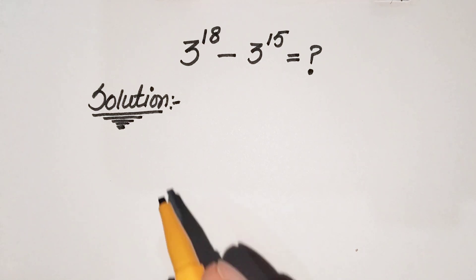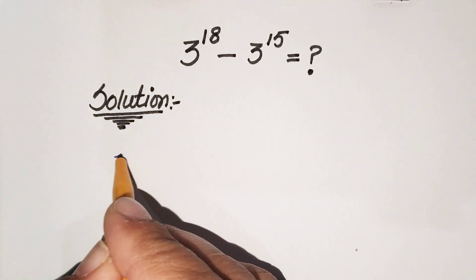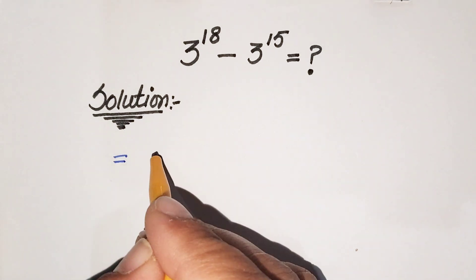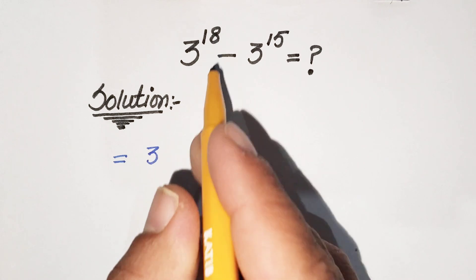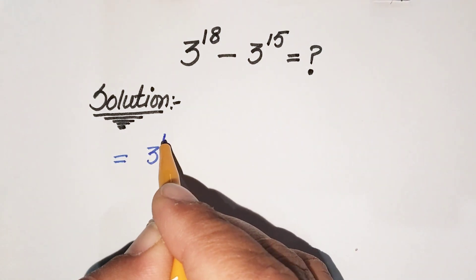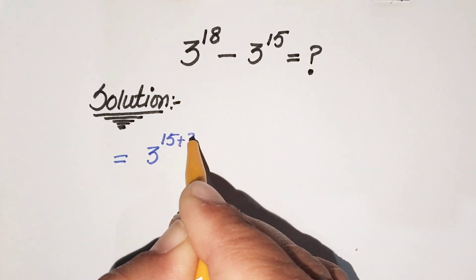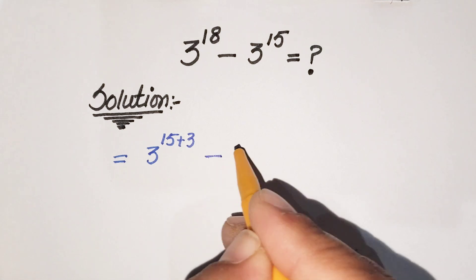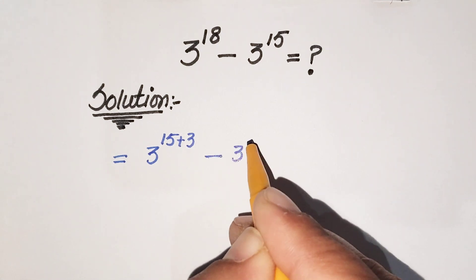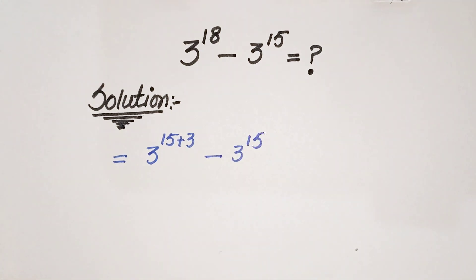First of all, we can write that 3 raised to the power 18 can be rewritten by factorizing 18 as 15 plus 3, which is also equal to 18, and then minus 3 raised to the power 15.